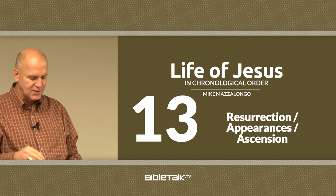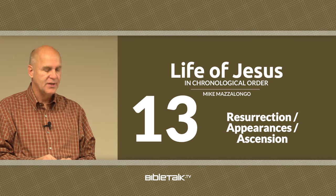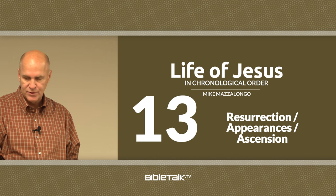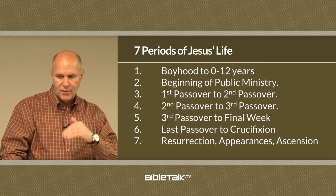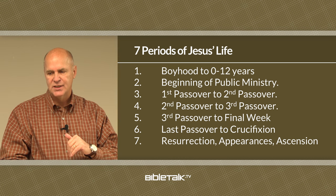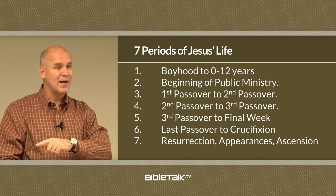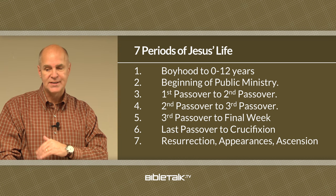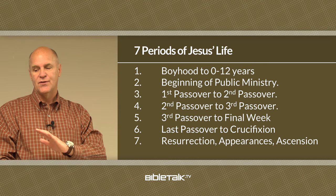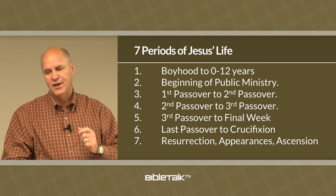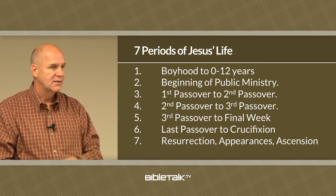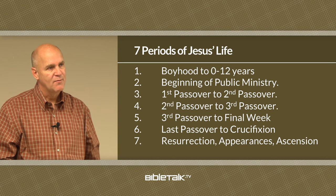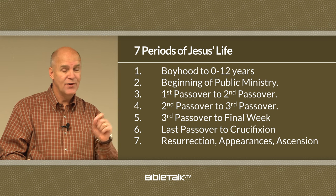There are three main events that took place after the death and burial of Jesus, each described in a series of scenes by the gospel writers. Here is the slide about the seven periods of Jesus's life that we've covered: the boyhood period, the beginning of His public ministry, the first Passover to the second, the second to the third Passover, the third Passover to the final week, the last Passover to the crucifixion, and today — the resurrection, appearances, and ascension. Those seven periods covered 154 different events. We're now at event number 140.